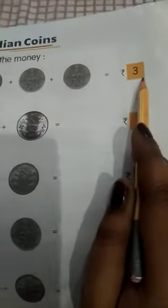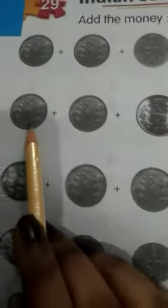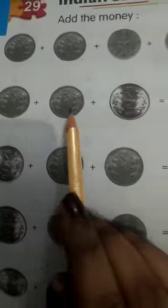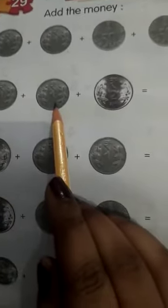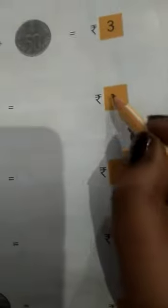How much is this? Rupee 3. Okay. This is 1 plus 1 is 2, plus 2 is equal to 4. How much is this? 4.